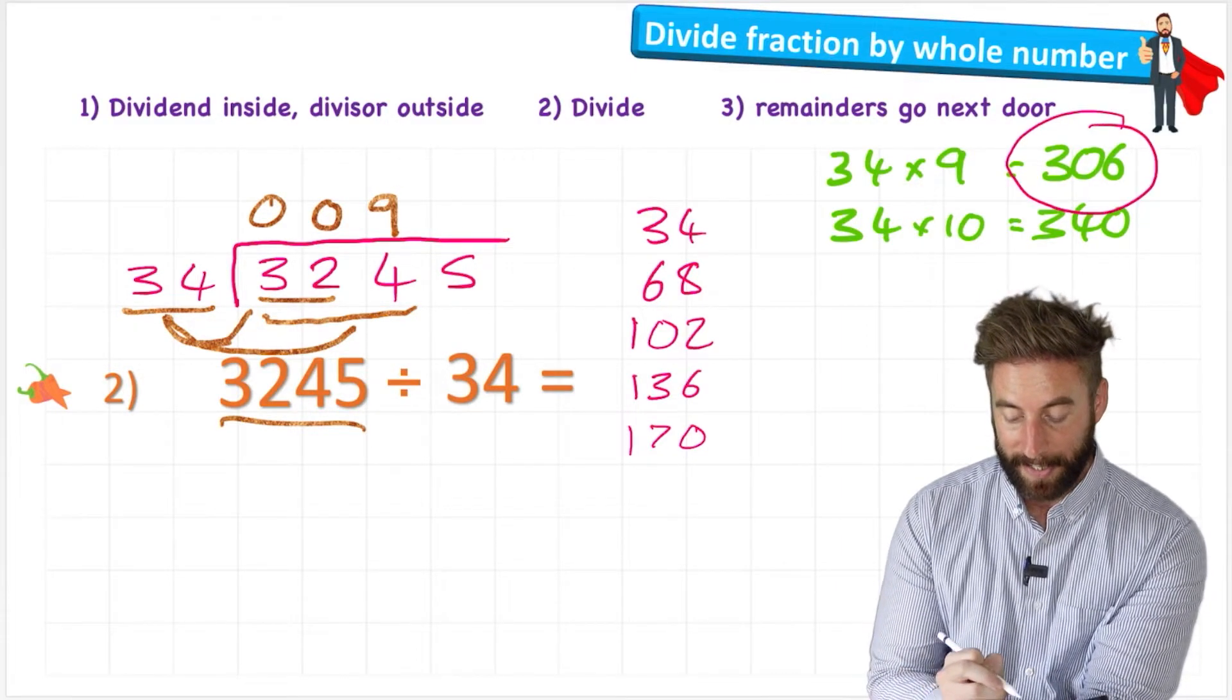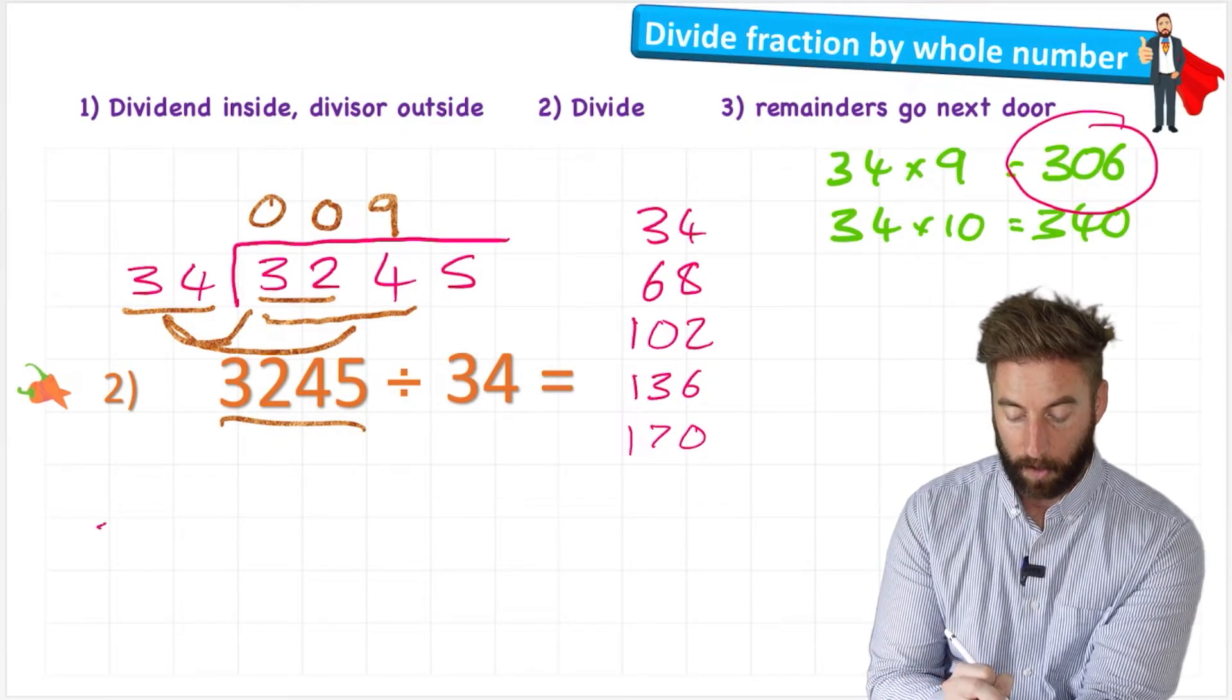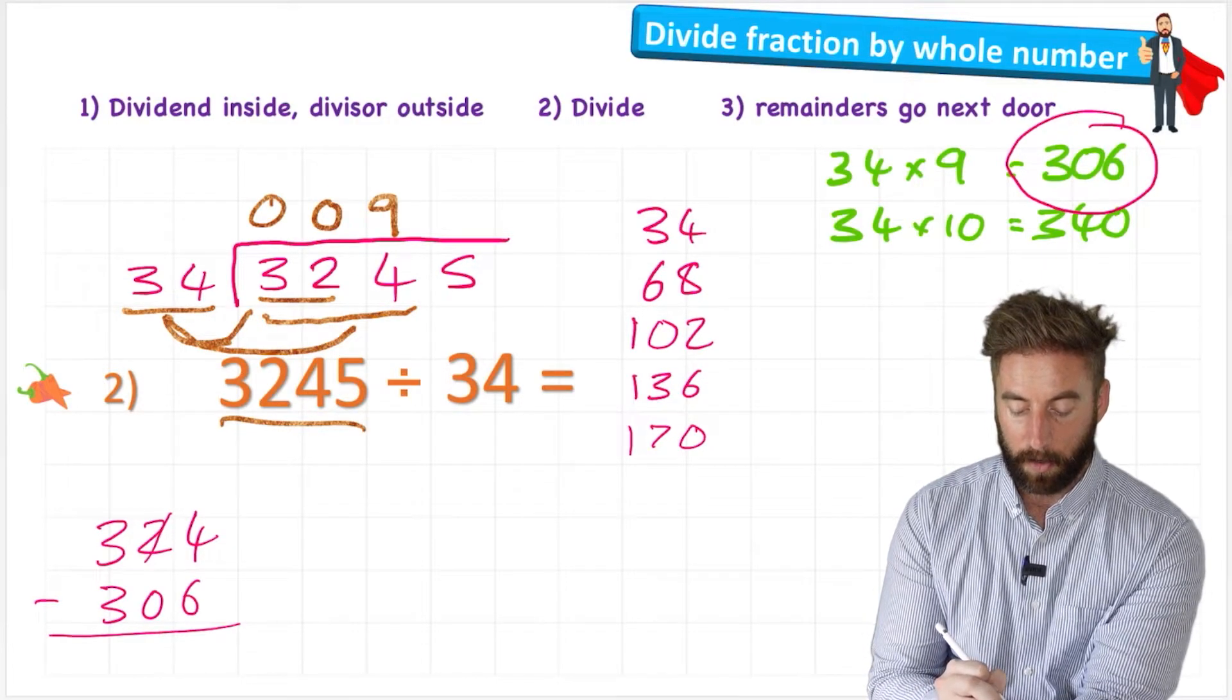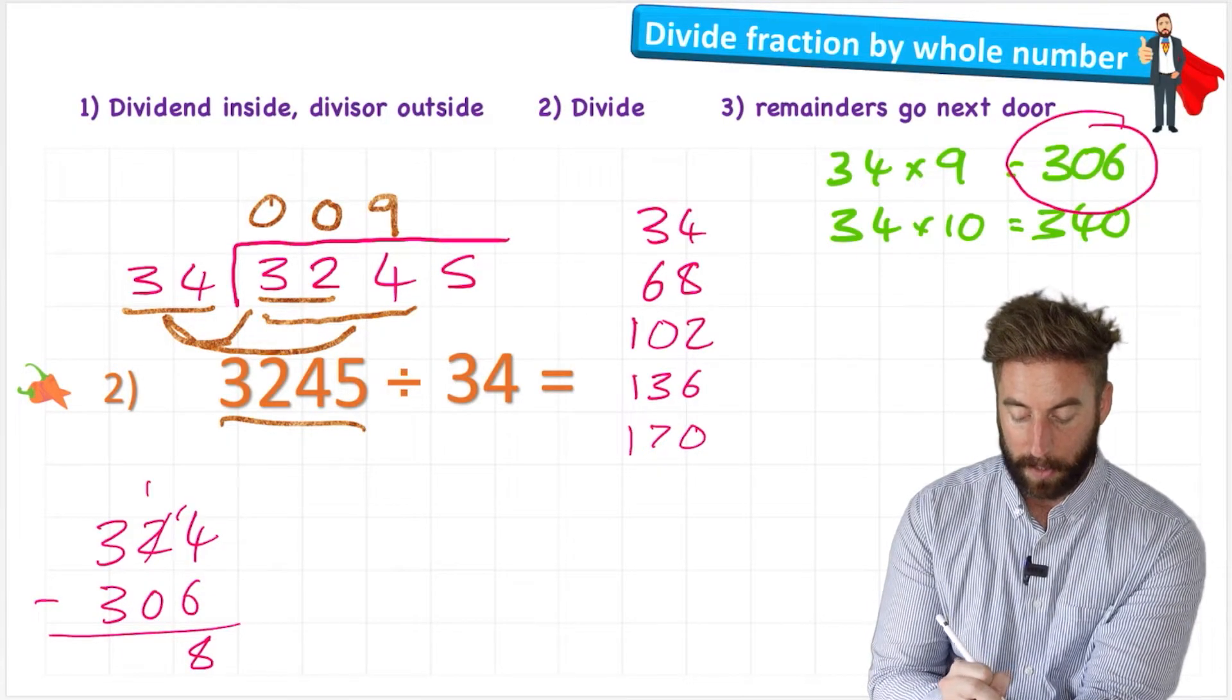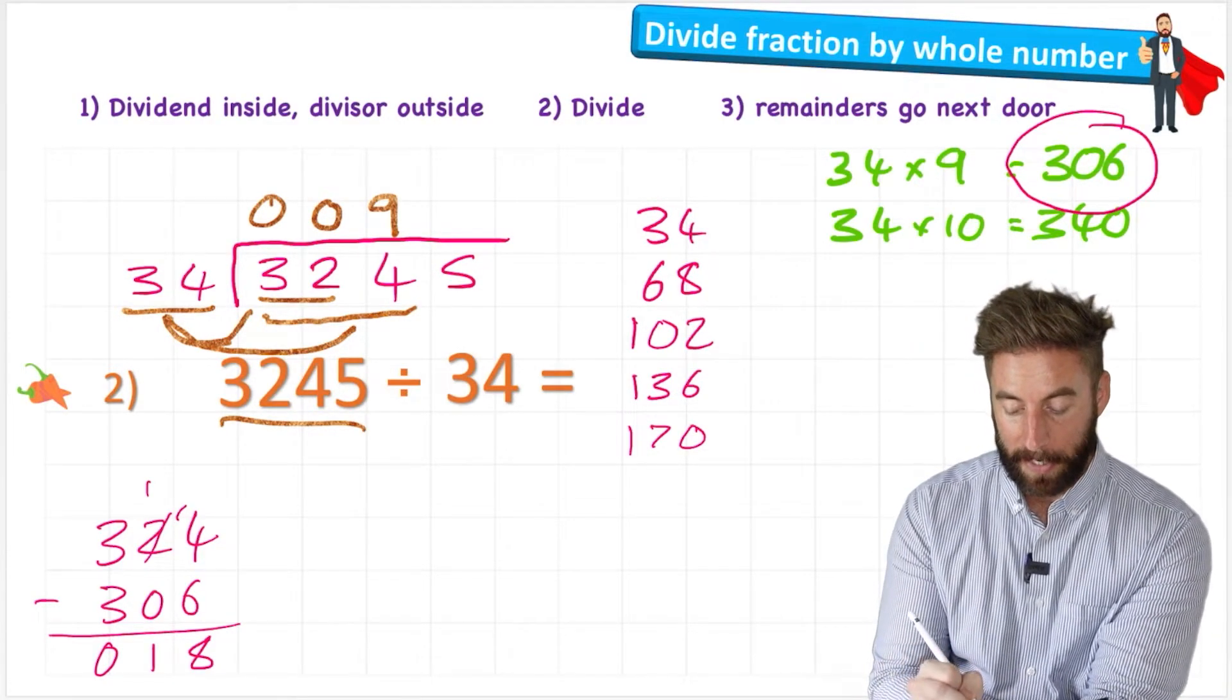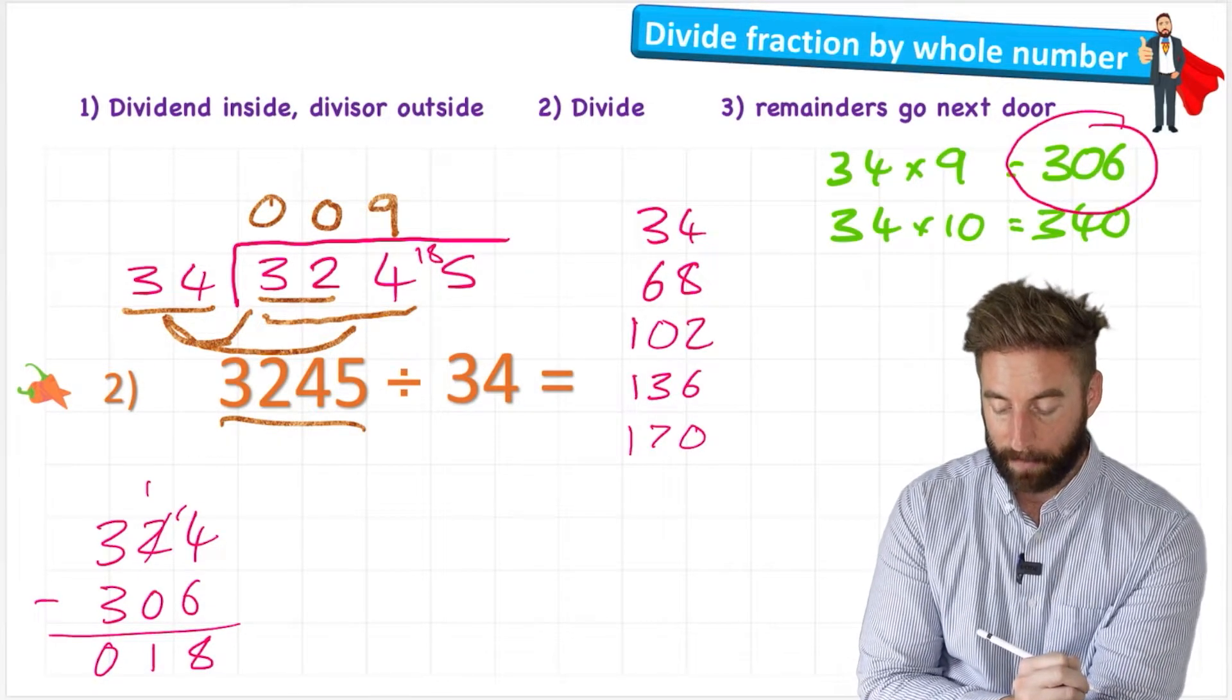So I can see from that that there's going to be 9 34s in 324. But I only got to 306. So what's the difference between 306 and 324? Well, I can do 324 subtract 306. 4 subtract 6 can't do. 14 subtract 6 is 8. 1 subtract 0 is 1. 3 subtract 3 is 0. So the difference is 18. So I give my 18 to my neighbour, turning that 5 into 185.